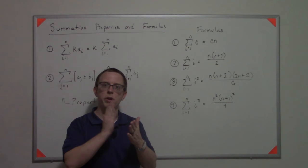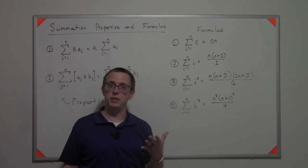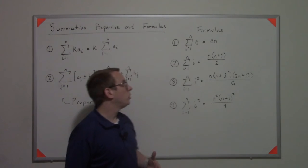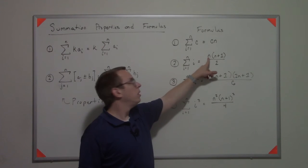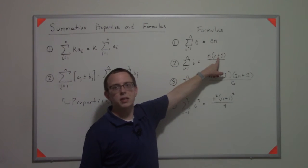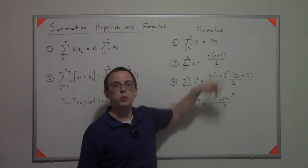If you sum up one, two, three, four, and five, you get 15. So if I instead plug it into this formula, five times six over two, which is 30 over two, I get 15.